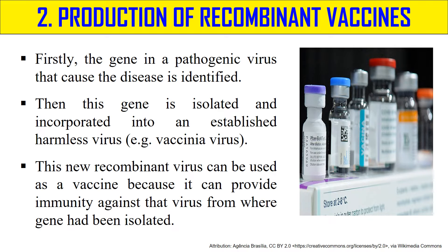The next application is the production of recombinant vaccines. Vaccines are preparations that give us immunity against disease. In killed or attenuated vaccines we use the pathogen itself, but in recombinant vaccines we take the gene for the particular protein causing the disease. That gene is isolated and incorporated into an expression vector, or in the case of viruses, incorporated into a harmless virus. This new recombinant virus can then be used as a recombinant vaccine.